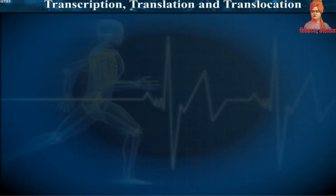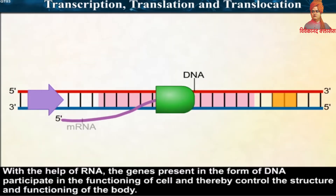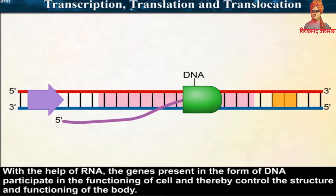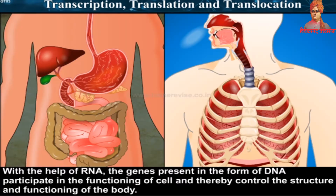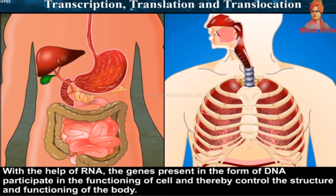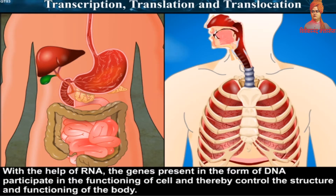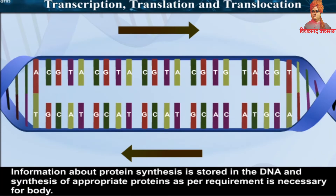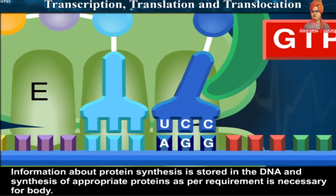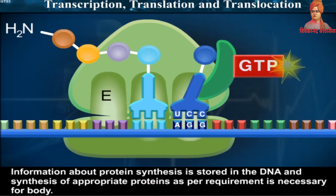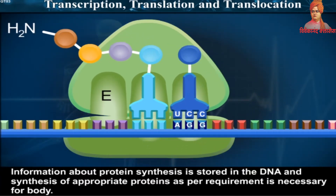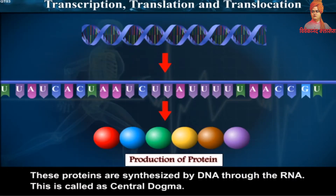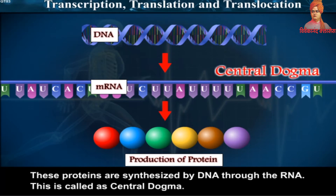Transcription, Translation and Translocation. With the help of RNA, the genes present in the form of DNA participate in the functioning of the cell and thereby control the structure and functioning of the body. Information about protein synthesis is stored in DNA, and these proteins are synthesized by DNA through RNA. This is called the central dogma.